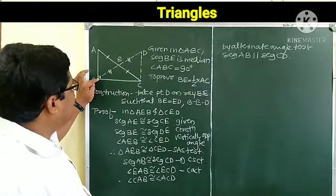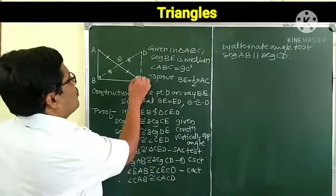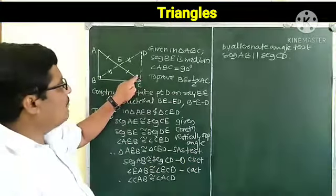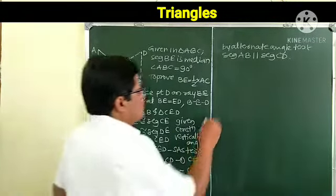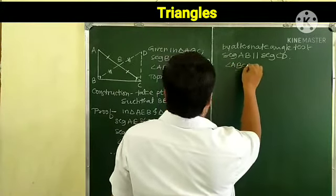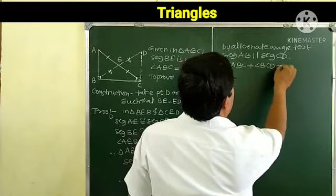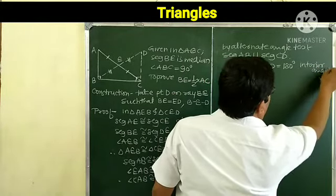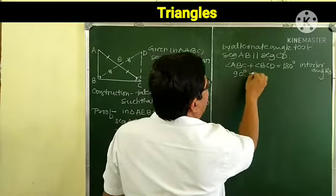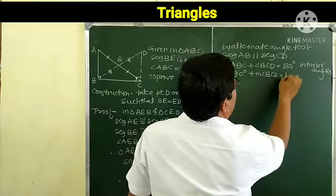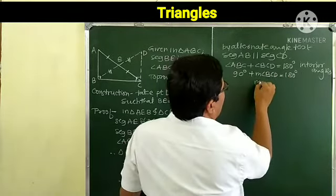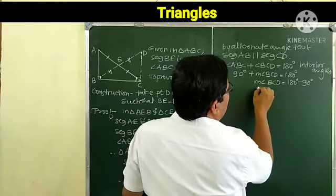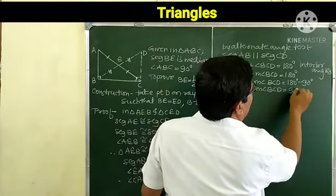Since AB is parallel to CD and angle ABC is 90 degrees, angle BCD also becomes 90 degrees because they are co-interior angles and 90 plus 90 equals 180. So angle ABC plus angle BCD equals 180 degrees, giving measure of angle BCD equals 90 degrees.